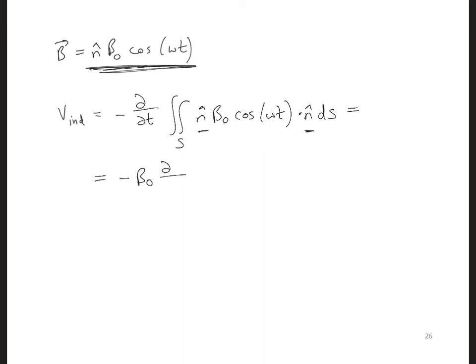And we still have minus, I just have, sorry, we still have D DT. And that is operating on this cosine omega T, since that is changing in time. And then we just have S DS, and that's just the area of the loop A.